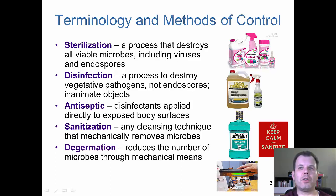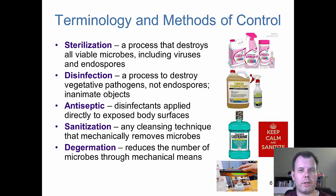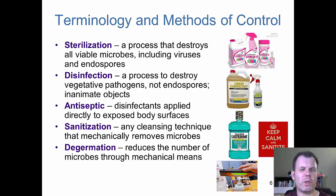De-germination reduces the number of microbes through mechanical means. For example, using a UV light. Obviously I like this picture because this is someone who has their first child — they have a baby bottle and they're eliminating all the germs with the UV light. Now the second child, you basically just want to make sure the dust and dirt is off. We call that de-germination — using a mechanical mean to decrease the number of microbes.